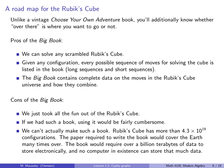Okay, so cons of the big book. Well, first of all, we just took out all the fun of the Rubik's cube. Though more practically, secondly, if we had such a book, using it would be fairly cumbersome. Got a lot of pages, which brings us to the most practical considerations is we can't actually make such a book. Rubik's cube has more than 4.3 times 10 to the 19th configurations. The paper required to write the book would cover the earth many times over.